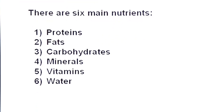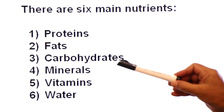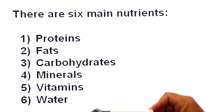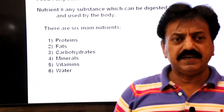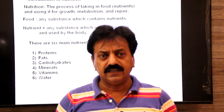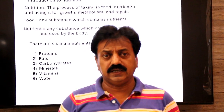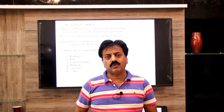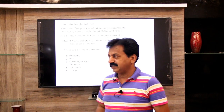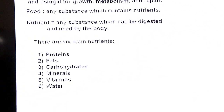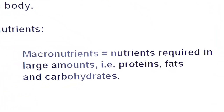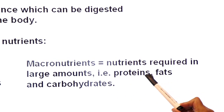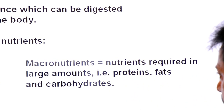The six important nutrients are proteins, fats, carbohydrates, minerals, vitamins, and water. Some of these are required by the body in large quantities — these are called macronutrients. Macronutrients are nutrients required in large amounts: proteins, fats, and carbohydrates — all three are macronutrients.